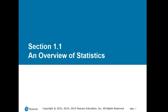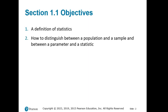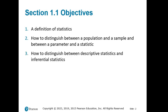In this first section, our objectives will be to formally define statistics as both a field of study and a characteristic coming from a sample, to learn how to distinguish between a population and a sample, and between a parameter and a statistic. We'll also learn how to distinguish between descriptive statistics and inferential statistics.